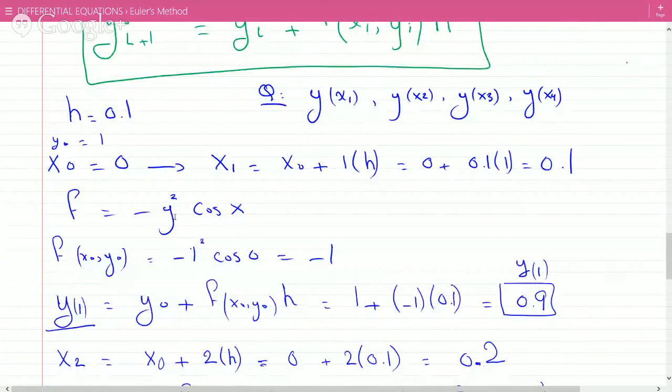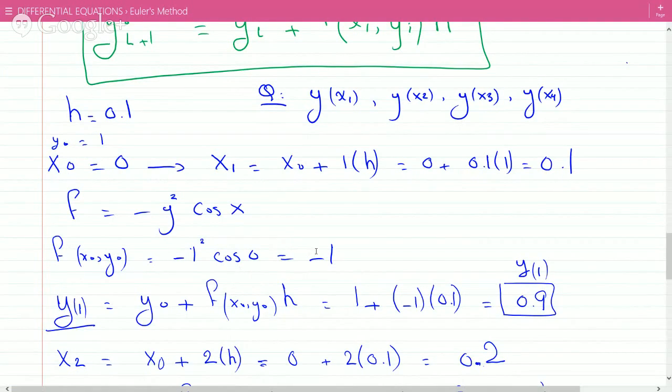Then we plug this into Euler's formula to find y1, which is y0 + f(x0, y0)h. y0 is 1 because the original point is (0, 1), plus -1 times 0.1, giving y1 = 0.9.